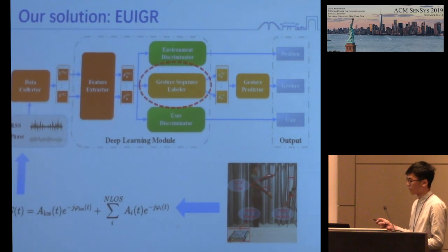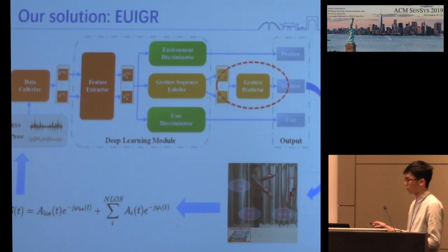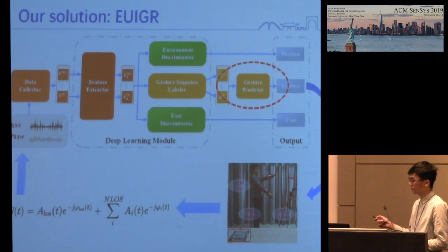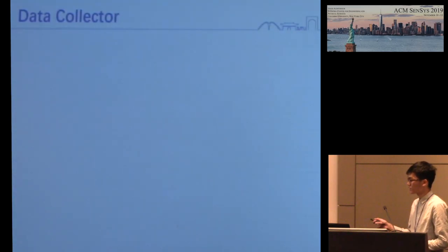Then, the gesture sequence labeler labels the feature strings, and gesture is continuously recognized. Finally, the gesture predictor predicts the ongoing gestures. Now, let's see the details.